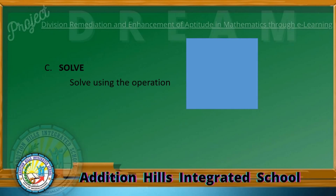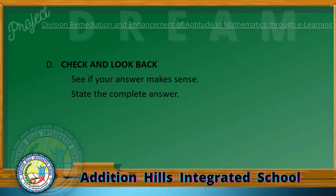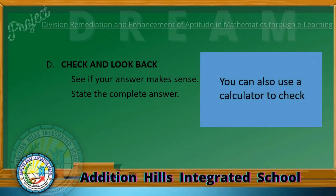Step C: Solve. Solve using the operation. 21 times 5 is equal to P105. Step D: Check and look back. See if your answer makes sense and state the complete answer. You can also use a calculator to check. The correct answer is Derek saves P105 in 21 days.